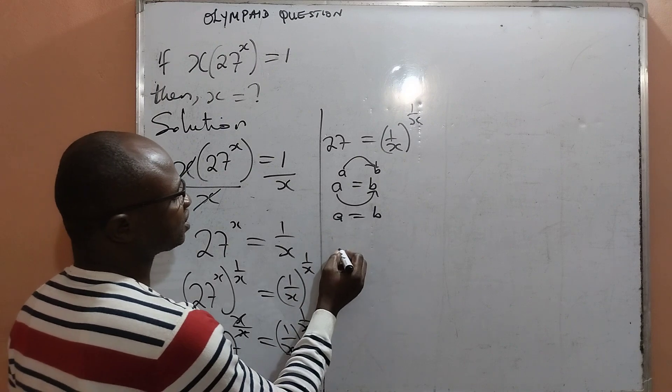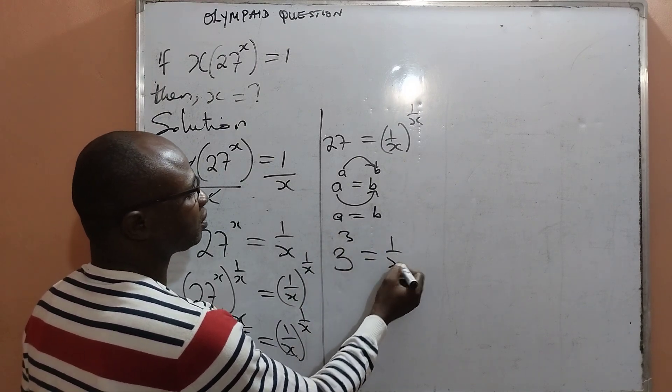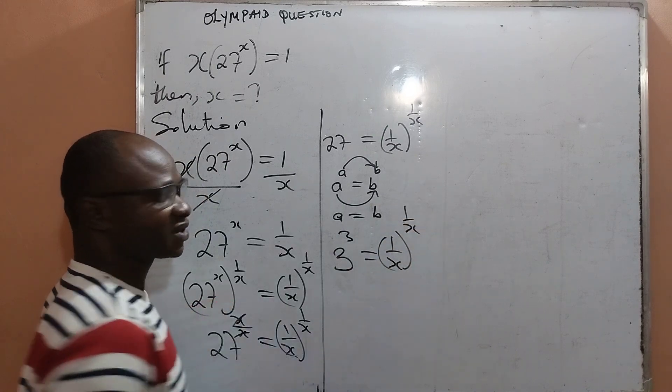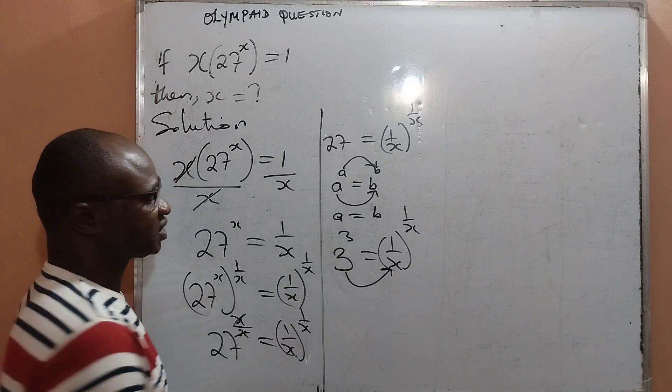That means 27 is essentially 3 to the power of 3, which is equal to 1 all over x then to the power of 1 all over x. And by this, I can cancel out that 3 is equal to 1 all over x.